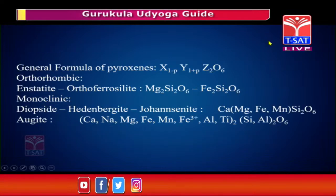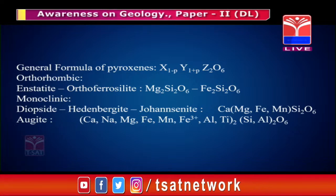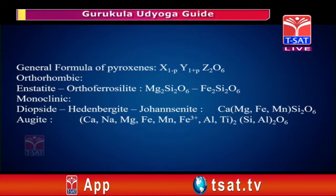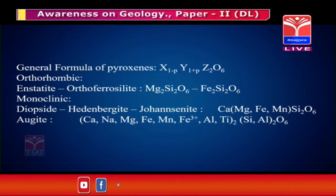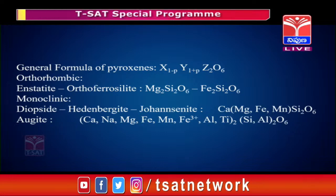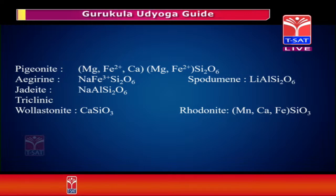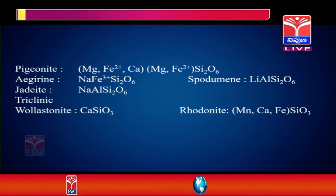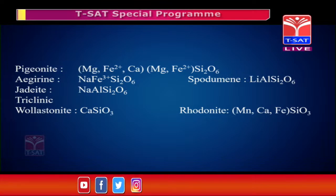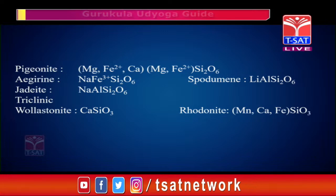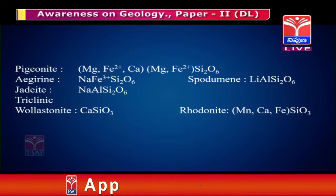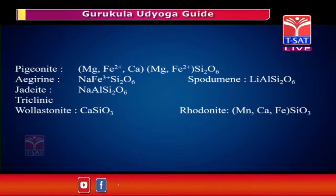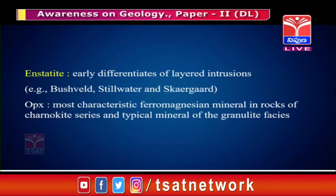Then we will move on to the pyroxenes. The pyroxene general formula is X(1-p) Y(1+p) Z2O6. Pyroxene crystallizes in three crystal systems: orthorhombic, monoclinic, and triclinic. Enstatite to orthopyroxene is orthorhombic. Monoclinic includes diopside, hedenbergite, johannsenite, augite, pigeonite, acmite, aegirine, and spodumene. In triclinic we have wollastonite and rhodonite. Important points: aegirine is a mineral containing Fe3+; spodumene is a lithium pyroxene. There are only two triclinic pyroxenes, namely wollastonite and rhodonite.